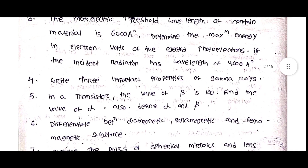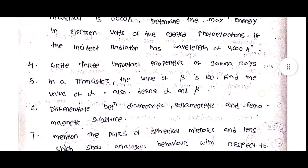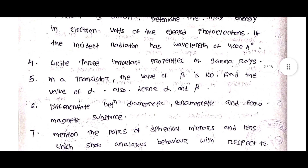There are important properties of gamma radiation. In a transistor, the value of beta is 100; find the value of alpha. Also define alpha and beta.